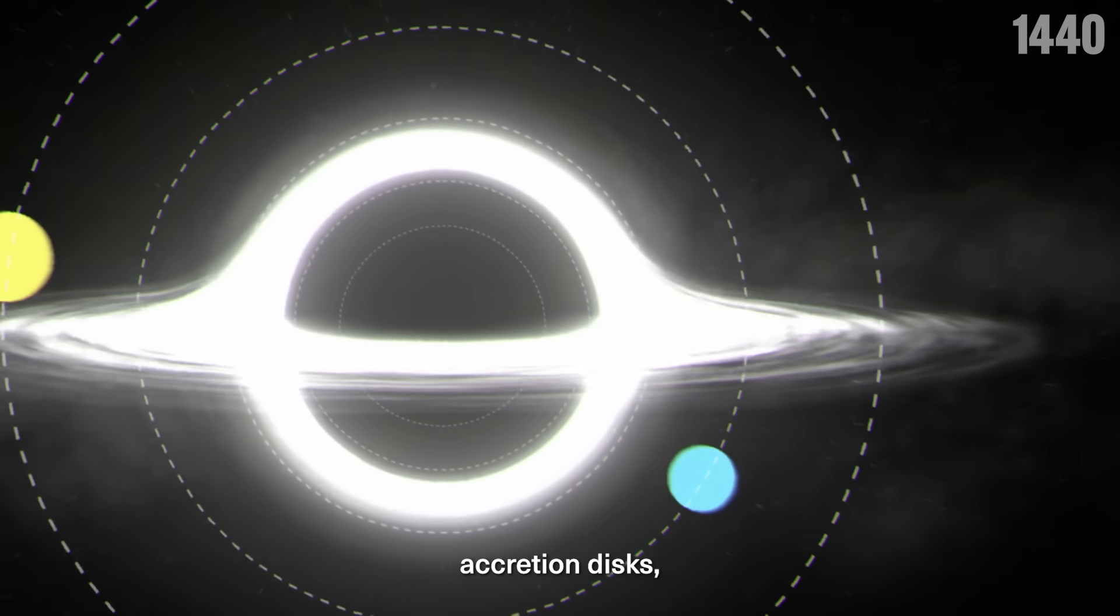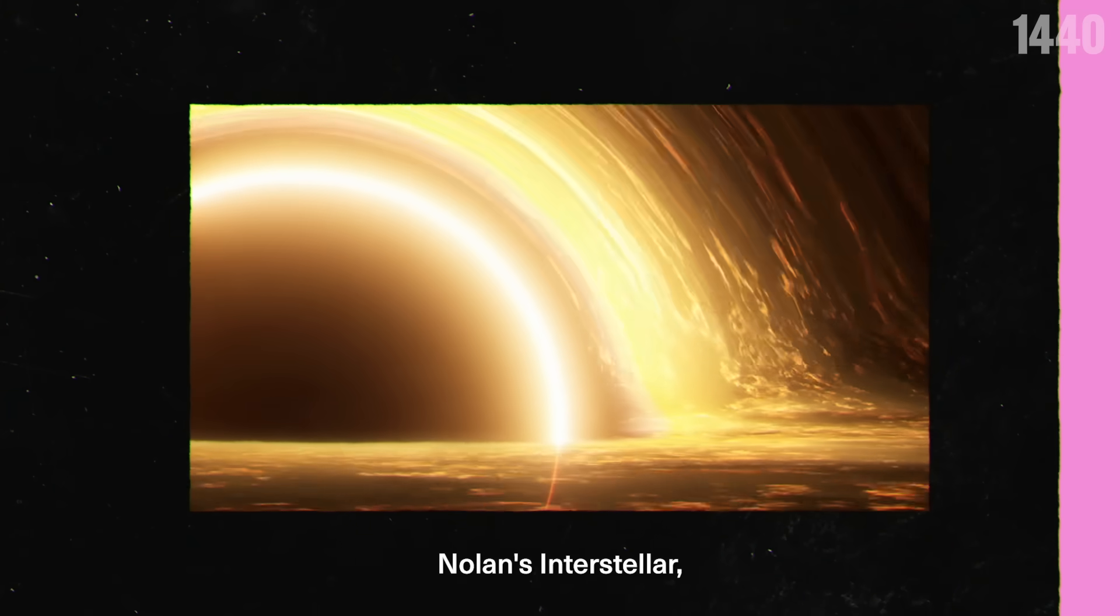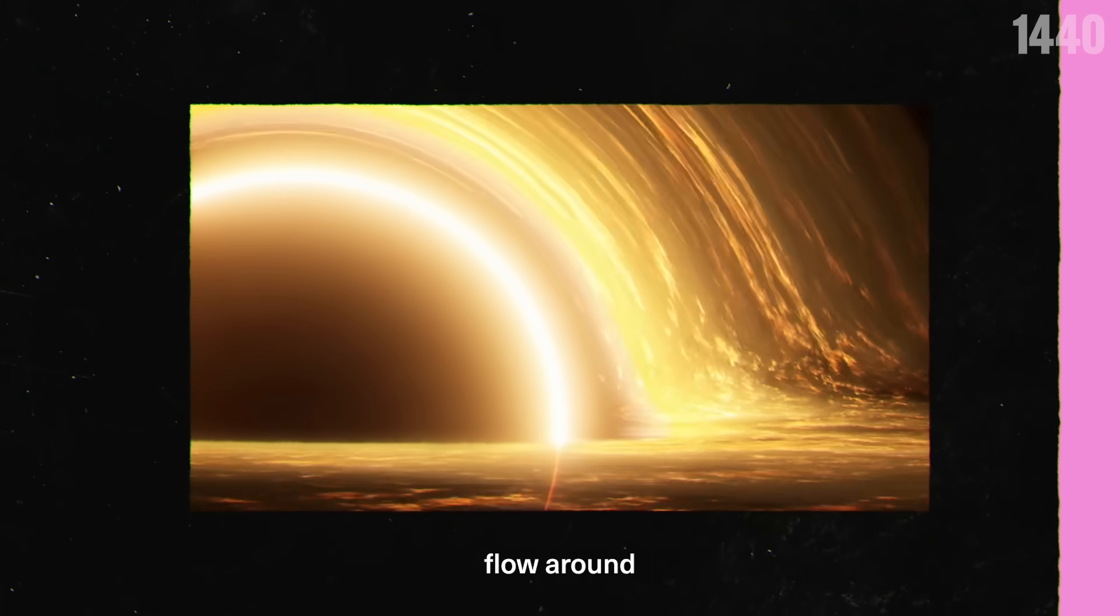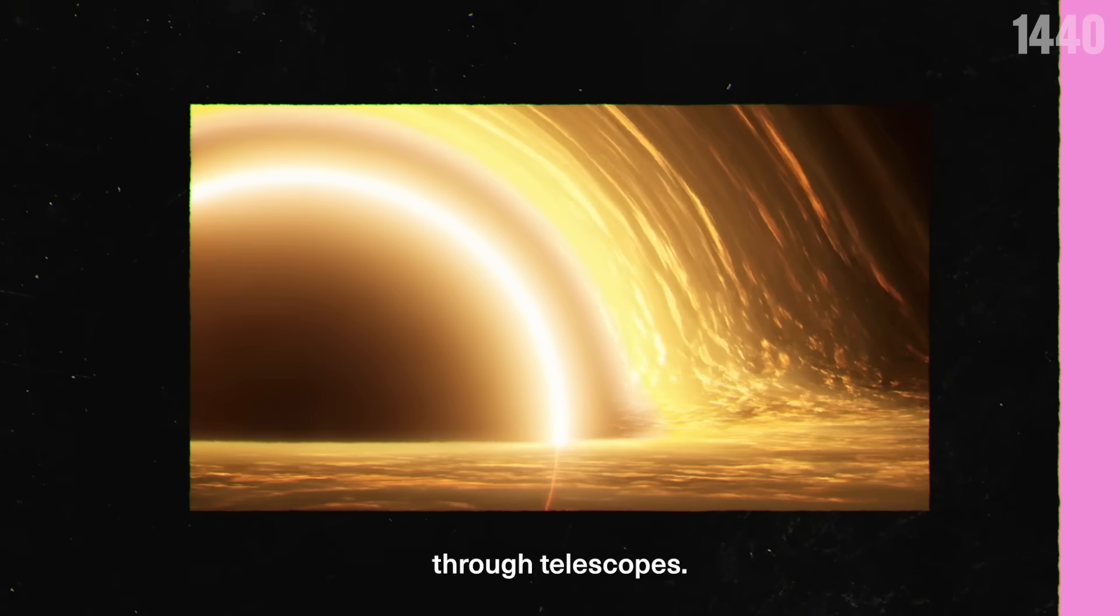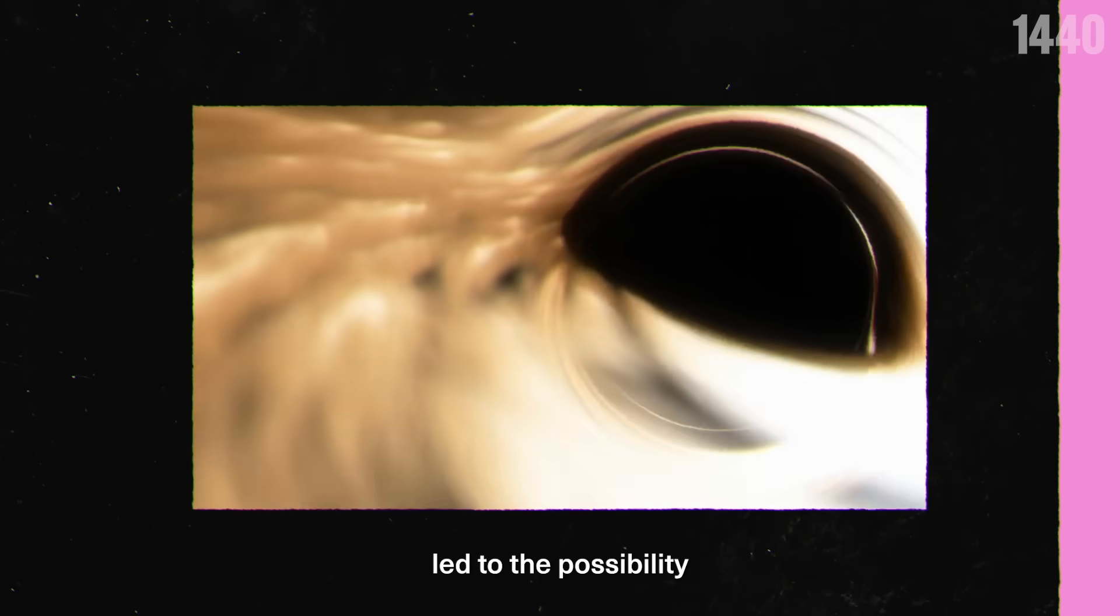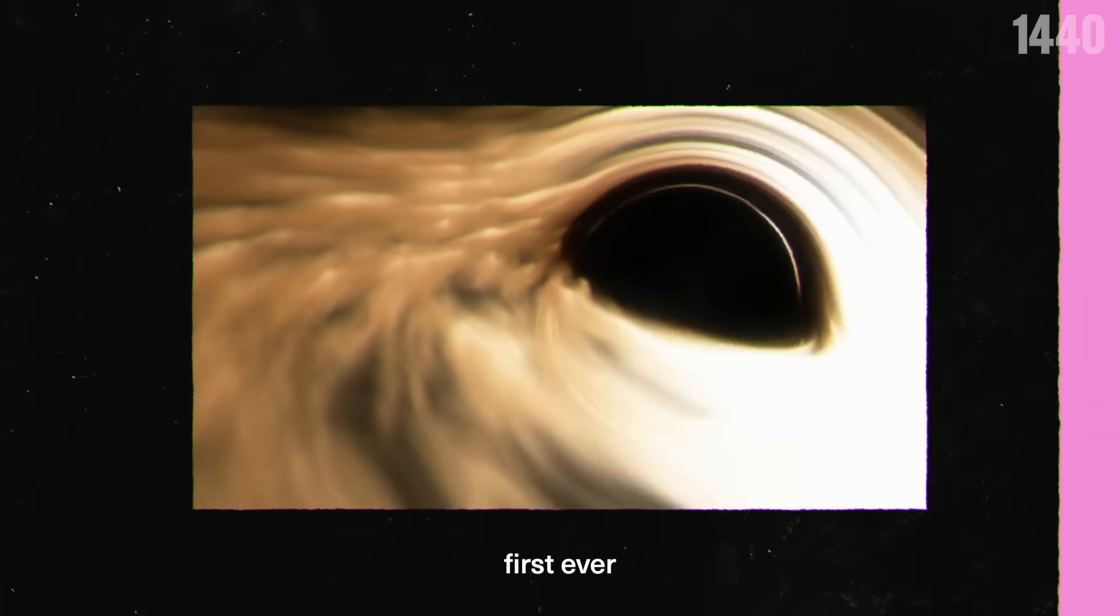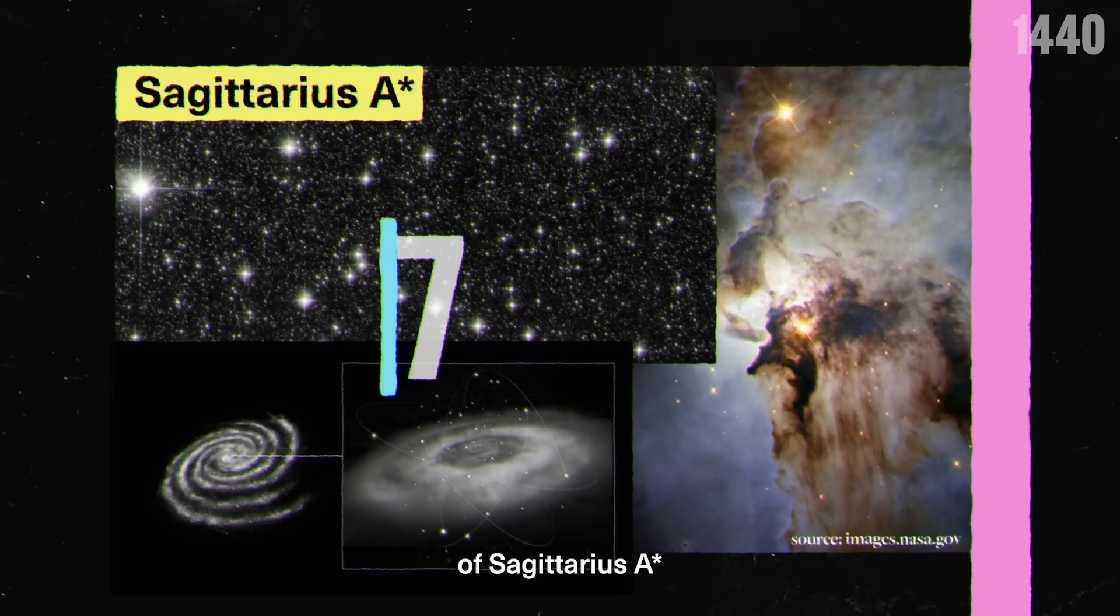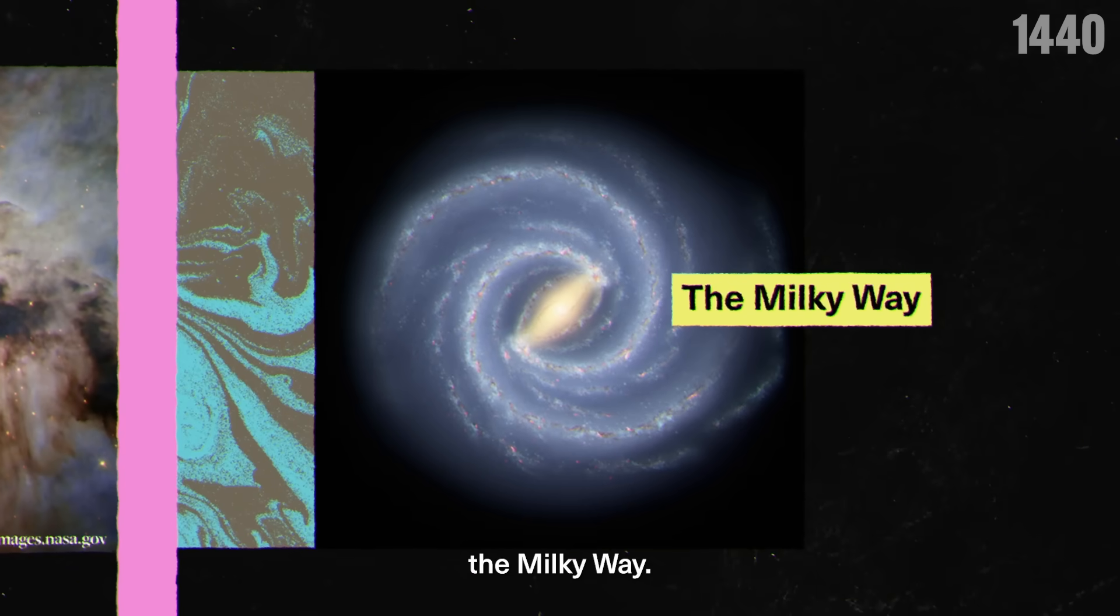Black holes can also form accretion disks, which look very similar to the ones shown in Christopher Nolan's Interstellar, where gas and dust float around the black hole creating an event horizon observable through telescopes. This event horizon led to the possibility of the Event Horizon Telescope capturing the first ever photograph of Sagittarius A star in 2022, which sits at the center of our own galaxy, the Milky Way.